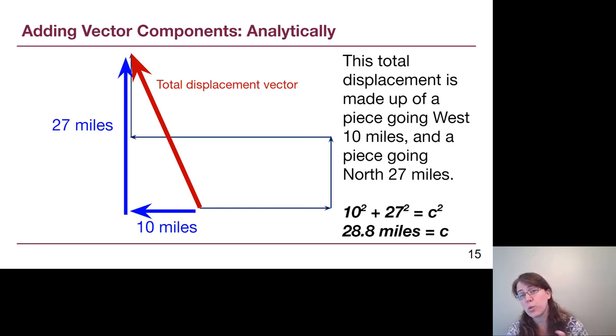So because we went 20 miles in one direction and 30 miles opposite, we would take 30 minus 20 and the side to side piece, which points to the left here, is 10 miles long. And because we went 15 miles north and 12 miles north, those add together and now we are much farther north than we were at the start, 27 miles instead.